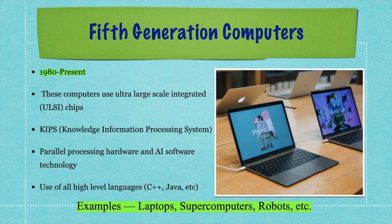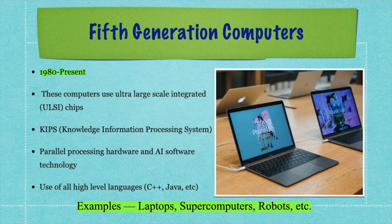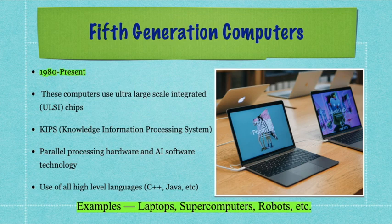Fifth generation computers feature the most advanced technology and latest processing systems, with more advancements in artificial intelligence. For example, your mobile can be connected to your geyser — when you wake up, the geyser automatically turns on. Your coffee maker is connected to your phone, and connected cars are another example. We have used AI technology where machines are being made to think and process like humans. This is our fifth generation computer system.